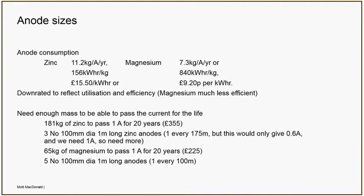For our 530 meters of 600 mm diameter pipe needing one amp, we will need 181 kilograms of zinc, costing about £355 at commodity market prices — obviously an anode supplier will charge more once they've handled and processed it. Three 100 mm diameter, one-meter-long zinc anodes will give us 181 kilograms. Theoretically that's one anode every 175 meters, but from the earlier calculation we know we can only get 0.2 amps out of one anode. Since we need one amp, we actually need five anodes — one anode per 100 meters.